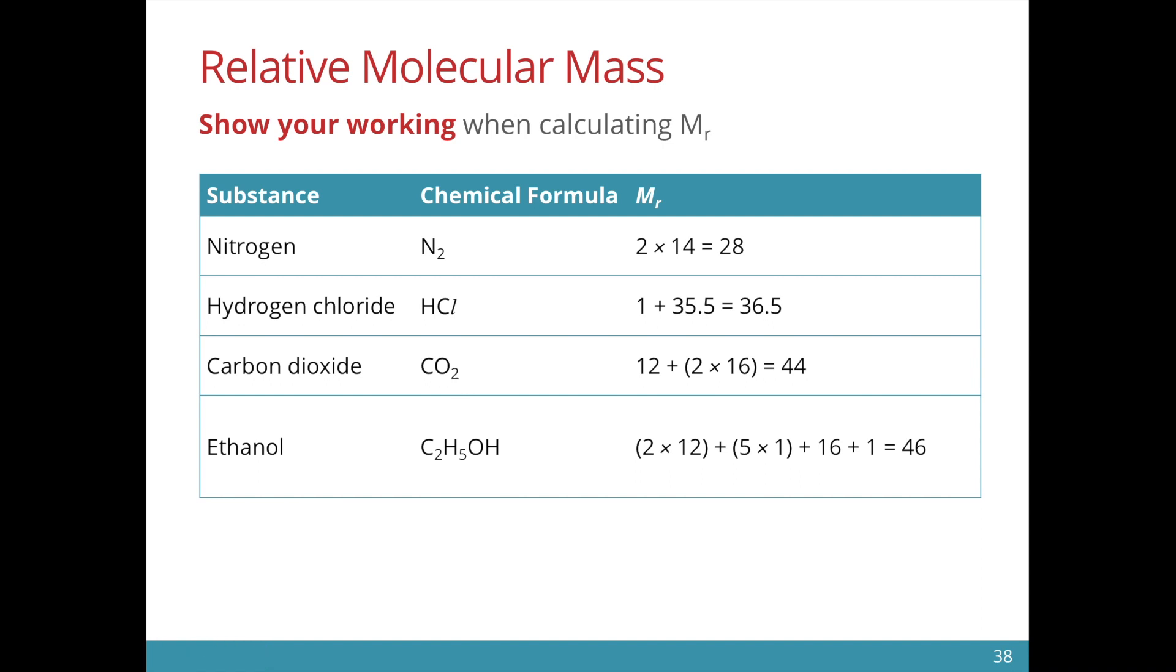For ethanol, we have 2 carbon, 5 hydrogen, 1 oxygen and 1 hydrogen so you can see the working here. 2 times 12, 5 times 1, 16 plus 1. So always show your working when you calculate the MR because marks will be awarded.